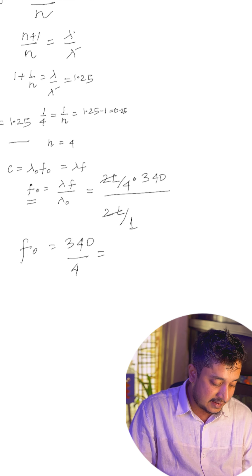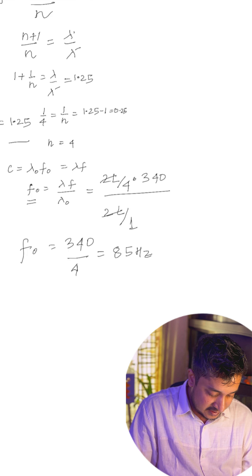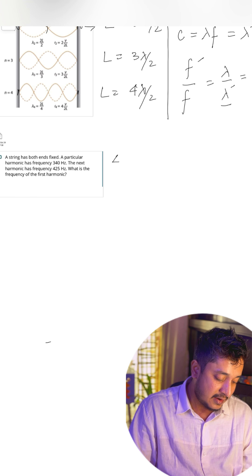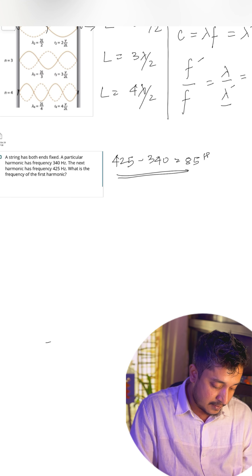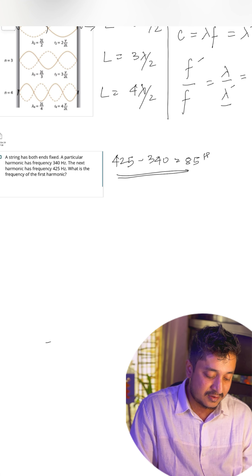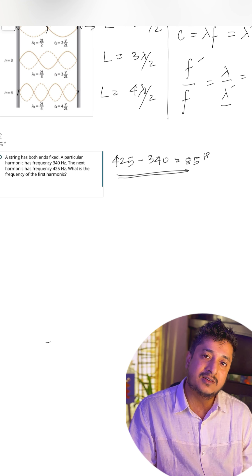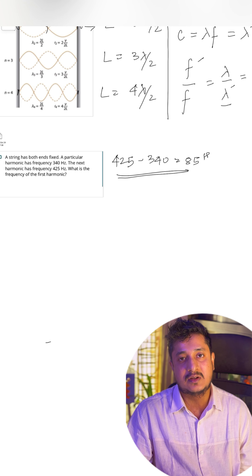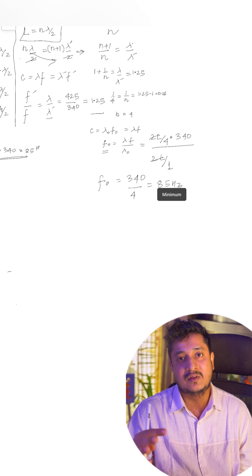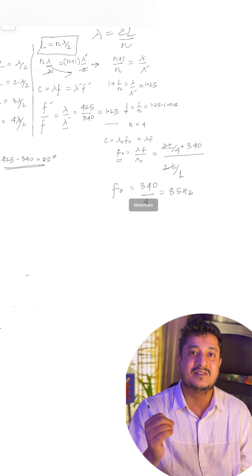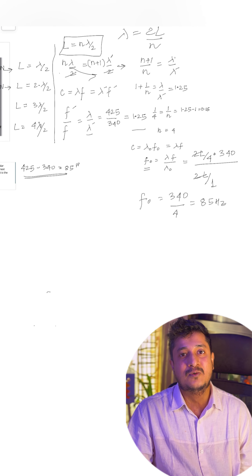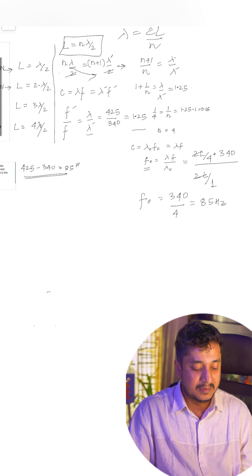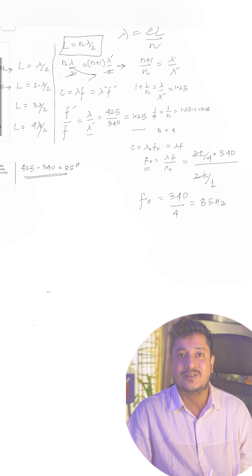So the fundamental frequency is 85 hertz. Notice that the difference between the nth and (n+1)th frequencies is also 85 hertz, since 425 − 340 = 85. For a string closed at both ends, the difference between consecutive harmonic frequencies equals the fundamental frequency. As a student, I hope you'll recall the practical demonstration to figure this out rather than solving it mathematically every time. I hope you liked this video — thank you!